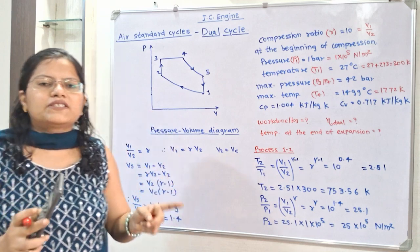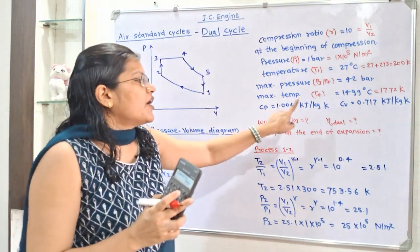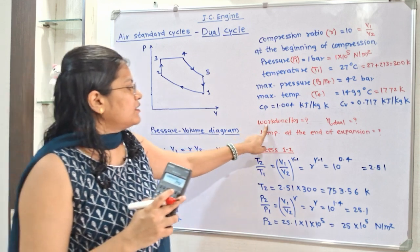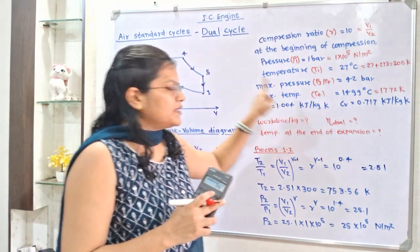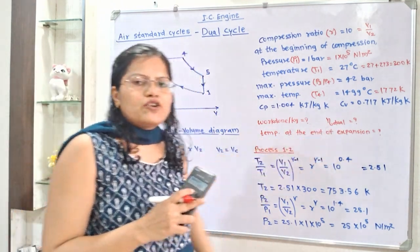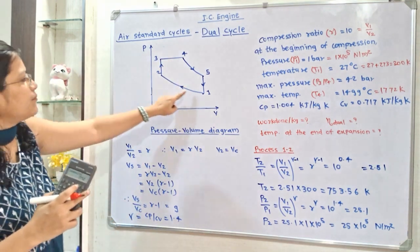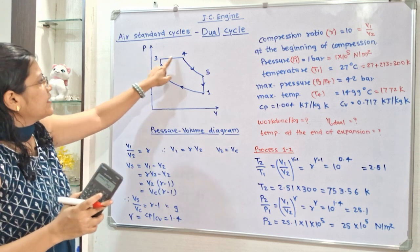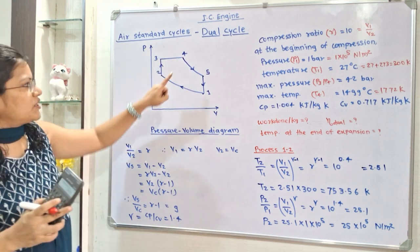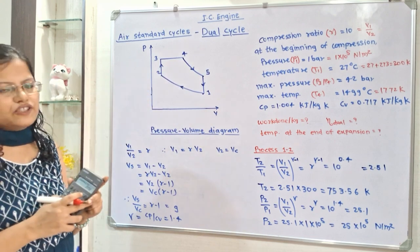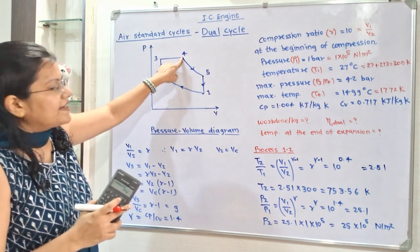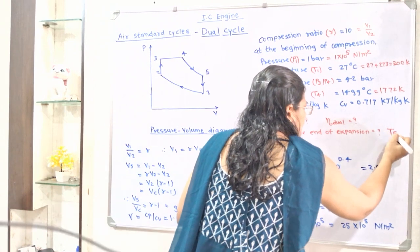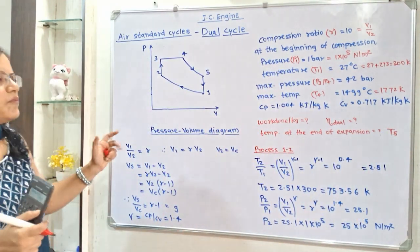The value of Cp (specific heat at constant pressure) and Cv (specific heat at constant volume) are given. We need to find work done per kilogram, efficiency of the dual cycle, and temperature at the end of expansion. Observing the diagram: 1 to 2 is isentropic compression, 2 to 3 is heat addition at constant volume, 3 to 4 is heat addition at constant pressure, and 4 to 5 is isentropic expansion. Temperature at end of expansion means we need to find T5.